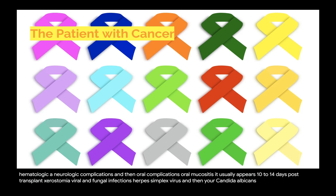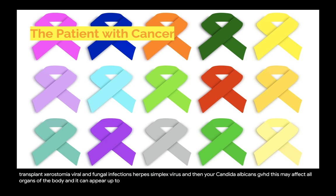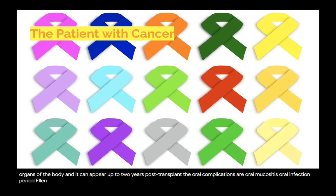Chronic complications include chronic GVHD, which may affect all organs of the body and can appear up to two years post-transplant. Oral complications include oral mucositis, oral infection, periodontal infection, xerostomia, and dental caries, as well as poor oral hygiene and difficulty eating and chewing.